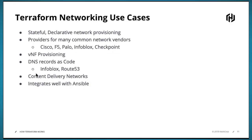For networking folks on the call, the two key differentiators for us in the networking domain are that we're stateful and declarative. There are many providers for the most common networking vendors — Cisco, F5, Palo Alto, IPAM and DNS systems like Infoblox, Checkpoint — which I think of as the traditional automate-all-the-things use cases. But with the transition to virtual network functions, what was a traditional router or switch may actually be a VM that we ourselves need to provision on top of cloud infrastructure, either on-prem or in a public cloud.